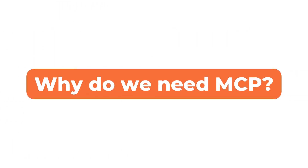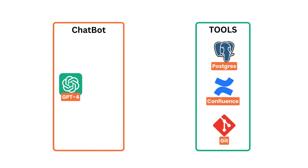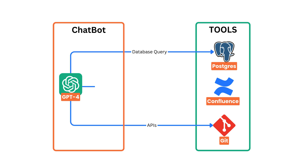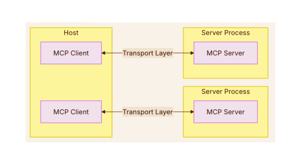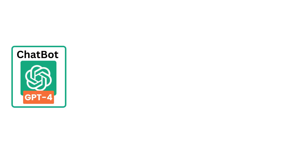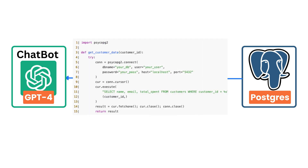Why do we even need MCP? What's actually broken in the current way AI fetches data? Right now, if you are building an AI chatbot, it might need to pull customer data from Postgres, project updates from GitHub, internal wiki pages, etc. Without MCP, you just write a simple function for each of these — query the database, call an API, or fetch from a file. Done. With MCP, you're introducing an entire inter-service architecture just to avoid writing those few function calls. And this is where I start having real doubts. If I want my AI to fetch customer data from Postgres, I can literally do this in 15 lines of code.